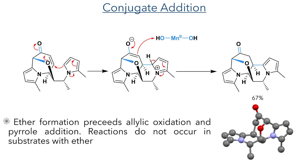This enone then underwent a spontaneous pyrrole addition, where the enone is attacked by the 2-position of the pyrrole to form a new carbon-carbon bond, in a 67% yield. This addition only occurred from the top face of the ring, as it is guided by the stereochemistry of the tertiary carbon in the seven-membered ring and further reinforced by the rigidity introduced by the bridging ether. Neither the allylic oxidation nor the pyrrole addition occurs in substrates that lack the bridging ether, indicating that the oxidation and ether formation occurs first in the reaction.